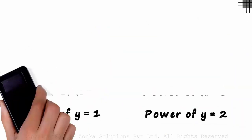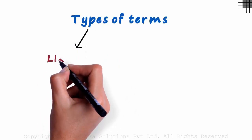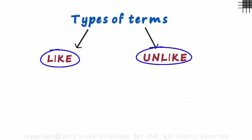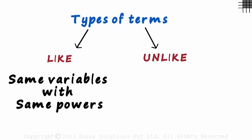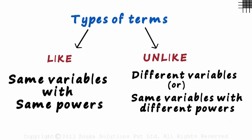Let's jump to the concept of the types of terms. There are two kinds of terms: like terms and unlike terms. Two terms are like if they have the same variables with the same powers. Two terms are unlike if they have different variables or same variables with different powers.